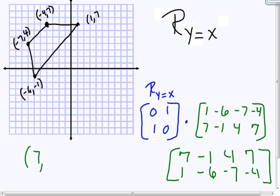7, 1, negative 1, negative 6, 4, negative 7, and 7, negative 4. And now plot these points, and we should have our reflection over the line y equals x.